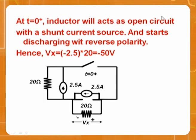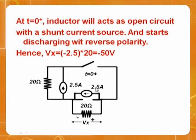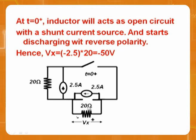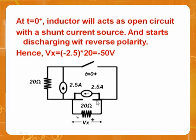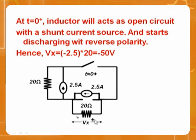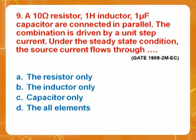At t=0 plus, the switch is opened. The inductor, which was carrying 2.5 amperes, now acts as a current source and discharges through the 20-ohm resistor. Current = 2.5 amperes, voltage = 20 × 2.5 = 50 volts. Considering polarities, the answer is minus 50 volts — option C.